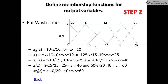For wash time, we have five linguistic variables: very short, short, medium, large, and very large. The corresponding values are: small at 10, medium at 25, large at 40, and very large at 60. The membership functions follow the same triangular rule — for example, (10 − z) / (10 − 0) with range [0, 10]; (z − 0) / (10 − 0) with range [0, 10]; (25 − z) / (25 − 10) with range [10, 25]; (z − 10) / (25 − 10), and so on for all output linguistic variables.